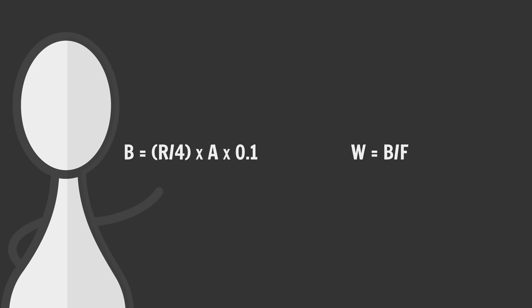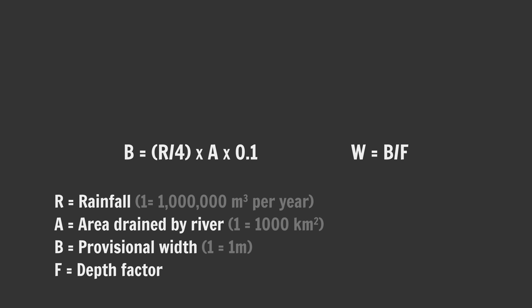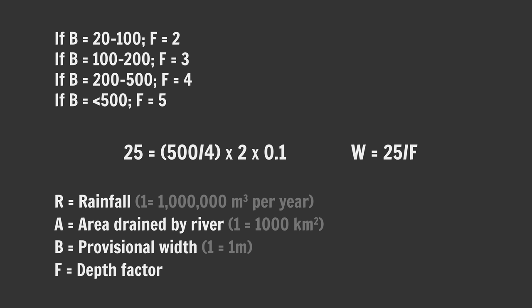You can roughly, very roughly, emphasis on roughly, ballpark how wide a river should be using these two formulas. Where R is the rainfall in the area drained by a river in terms of millions of cubic meters per year. For context, very wet climates might have a value of 1,200. Dry climates might be around 300. A is the area drained by a river in thousands of square kilometers. B is the provisional width of the river. And F is the so-called depth factor. So for argument's sake, let's say one of our rivers drains an area of 2,000 square kilometers. And that area receives 500 million cubic meters of rainfall per year. Then the provisional width of the river draining the area will be about 25 meters. Although you can vary this by about 30%, either way, if you wish. Now, plug B into the second formula. If B is between 20 and 100, then F, the depth factor, is 2. If B is between 100 and 200, then F is 3. Between 200 and 500, F is 4. And above 500, F is 5. In our case, F is 2, so the width of the river proper is about 12.5 meters.